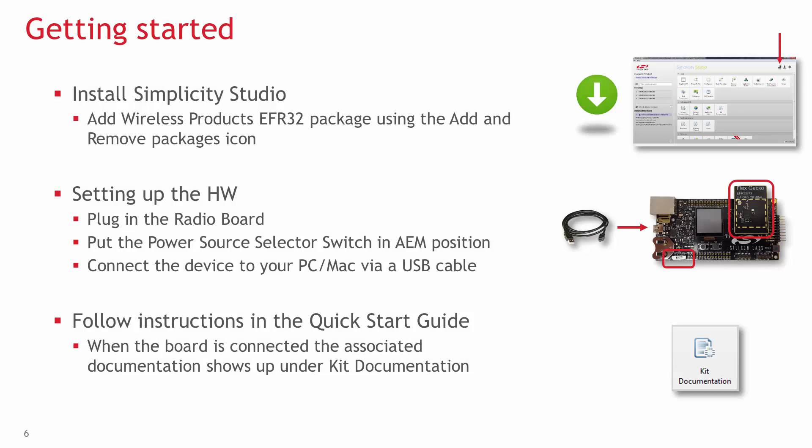Getting started with the EFR32 development tool is easy. Go to our website, download and install Simplicity Studio, and add the wireless products EFR32 package using the add and remove packages icon. Next, set up the hardware: insert the radio board, put the power source selector switch in AEM position, and connect the board via a USB cable.